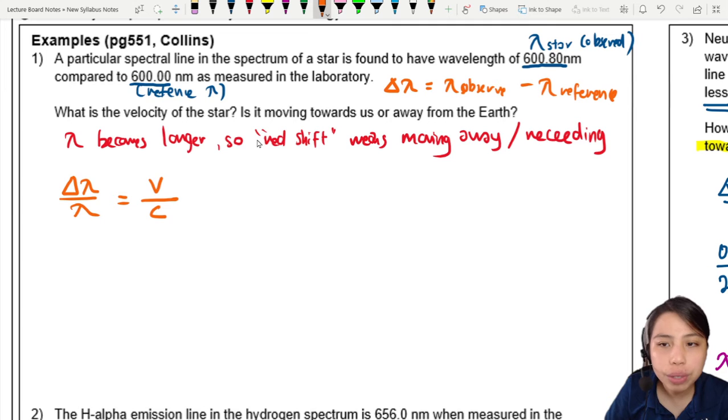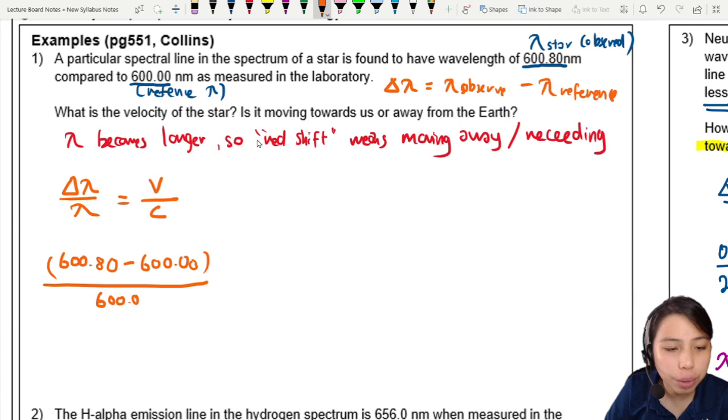So our observed wavelength is 600.80 minus your reference in the lab over the reference wavelength, which is 600.00.